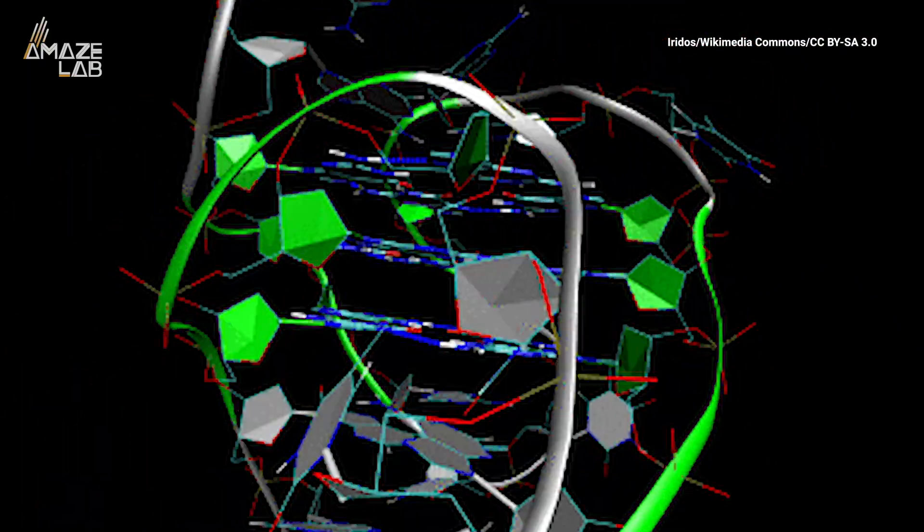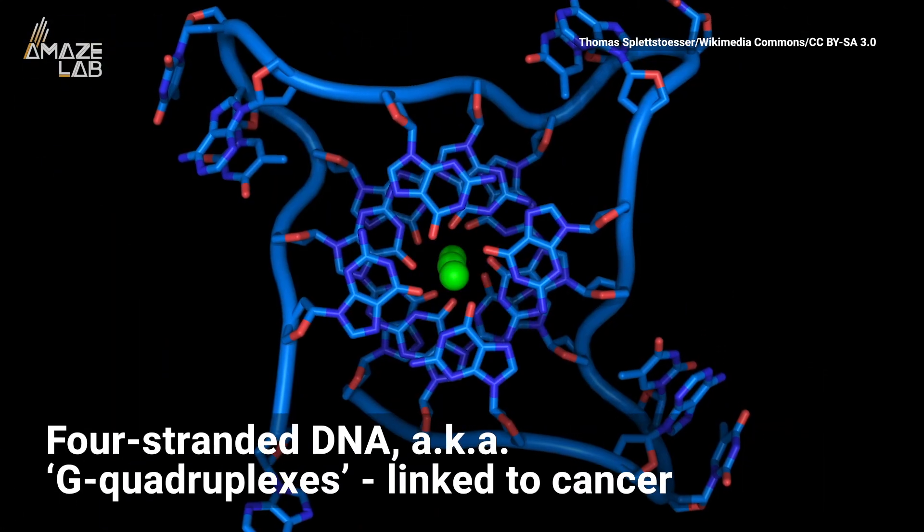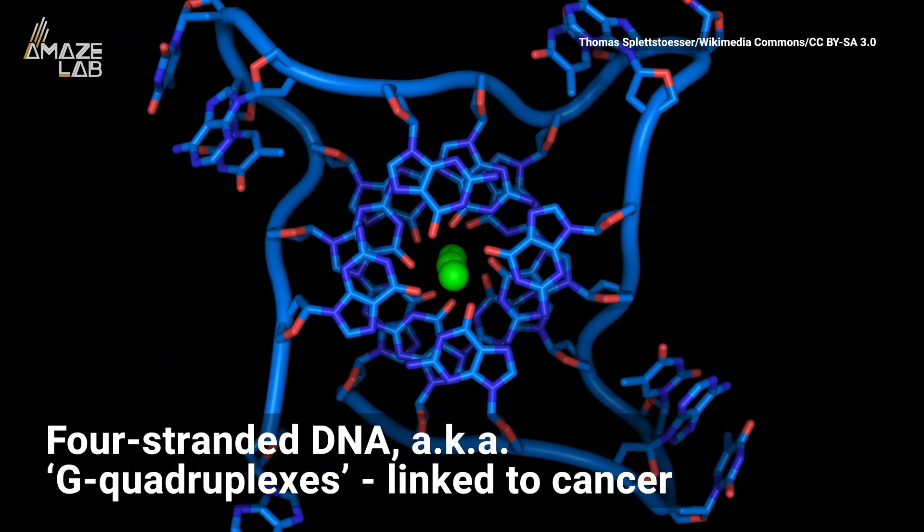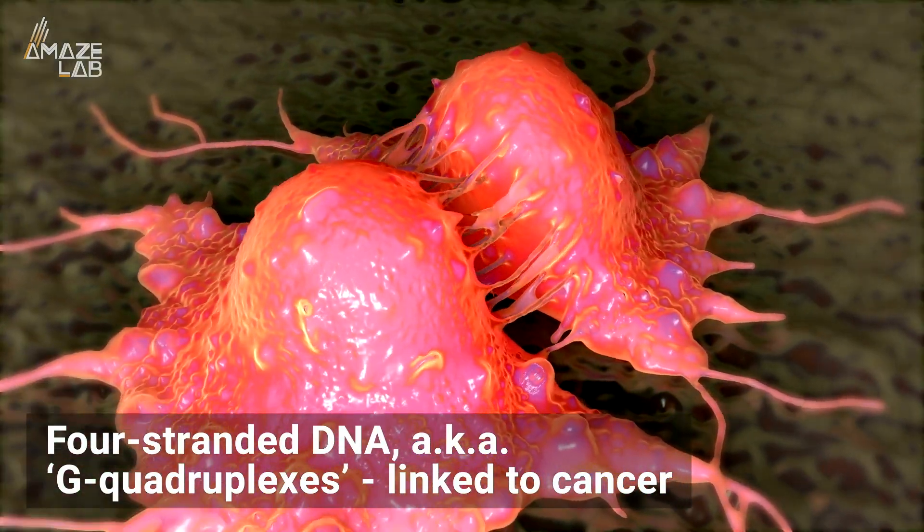But did you know that DNA can sometimes double up again to form a rare quadruple helix? Not much is known about four-stranded DNA known as G-quadruplexes, but it's believed they're linked to cancer cells and tumor growth.